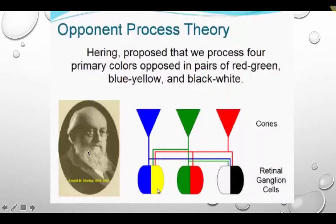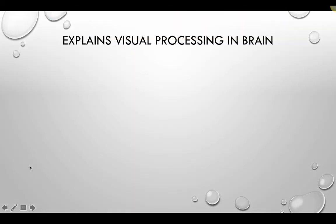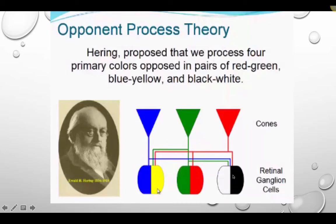In the opponent processing diagram, the cones — red long wavelength, green medium wavelength, and blue short wavelength — feed into the ganglion cells. In the blue-yellow opponent pair, if more blue signals are sent and less red and green, yellow shuts off and blue takes over. If more red and green come in, yellow takes over and blue is inhibited. The same applies to the red-green and black-white pairs.